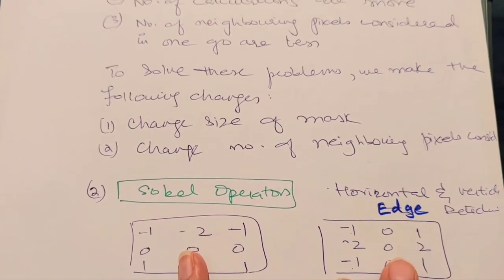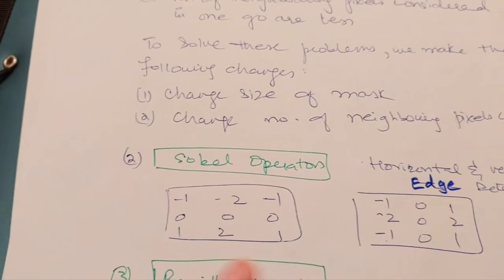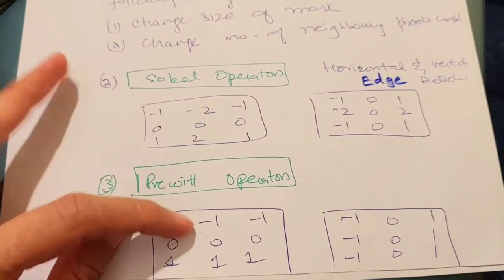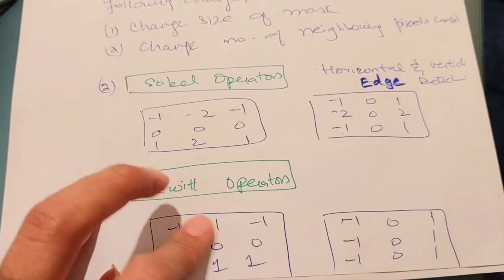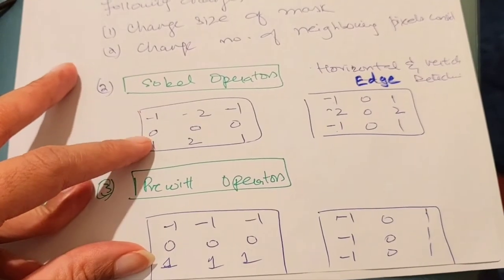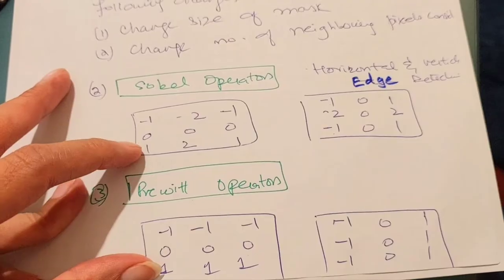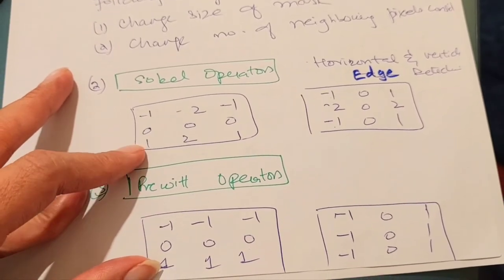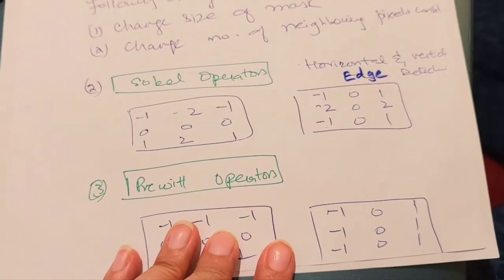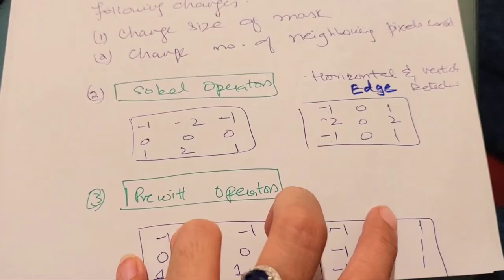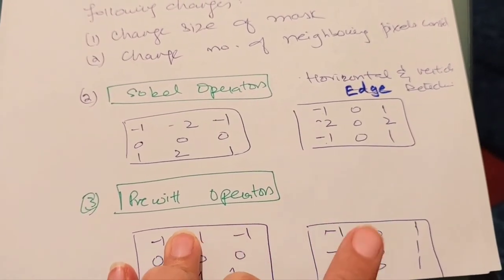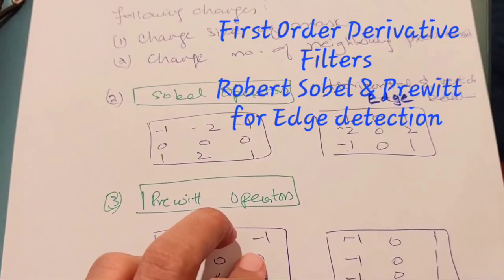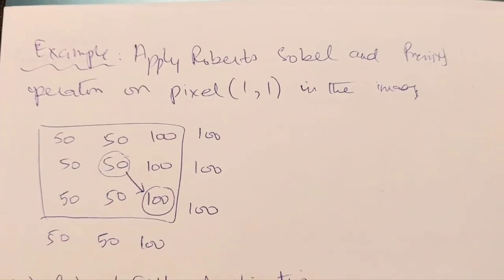In the Prewitt operator, the configuration is slightly different. Instead of -2 in the middle position, we get -1, making it a bit simpler compared to Sobel. Otherwise the configuration is the same: a row of zeros in the middle, negative signs in the first row, and no negative signs in the bottom row. It also has two versions — one to detect vertical edges and one to detect horizontal edges.